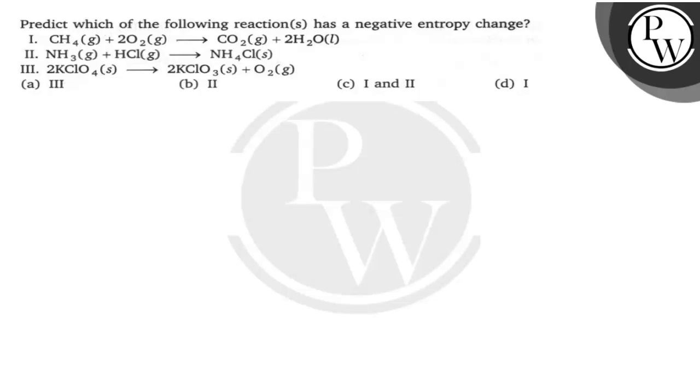Hello Bacho, the question asks: predict which of the following reactions has a negative entropy change? The reactions are: CH4 + 2O2 → CO2 + 2H2O, NH3 + HCl → NH4Cl, and 2KClO4 → 2KClO3 + O2.